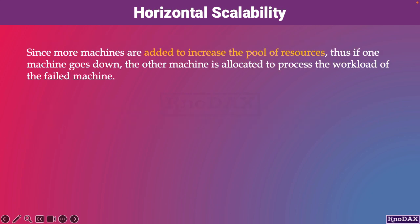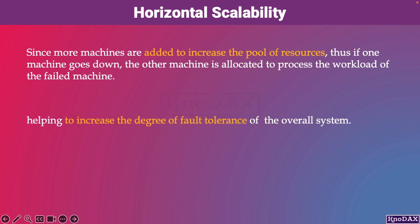In a horizontally scalable system, since more machines are added to increase the pool of resources, if one machine goes down, another machine is allocated to process the workload of the failed machine, thus helping to increase the degree of fault tolerance of the overall system.